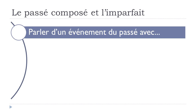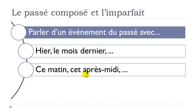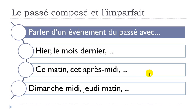If you want to speak about an event in the past with time markers such as hier (yesterday), le mois dernier (last month), ce matin (this morning), cet après-midi (this afternoon), dimanche midi (Sunday noon), or jeudi matin (Thursday morning), then with these structures, if you're talking about an event or action, you should definitely use le passé composé.